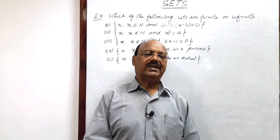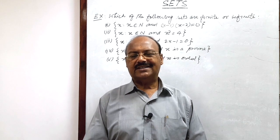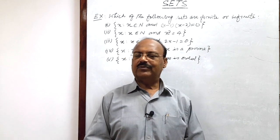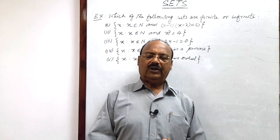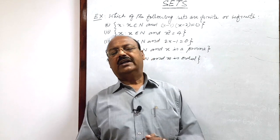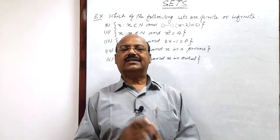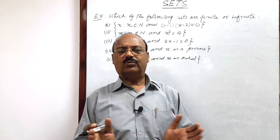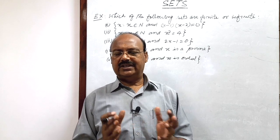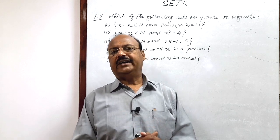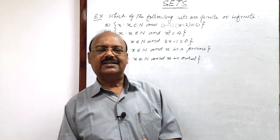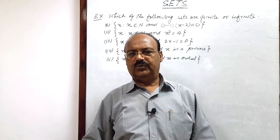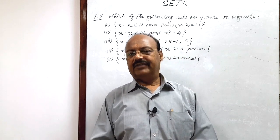For example, suppose we write the set of all vowels of the English alphabet. This will be a finite set, because this set consists of only five vowels: A, E, I, O, U. So here the number of elements is finite — this is an example of a finite set. But if you write the set of all natural numbers, there are infinite natural numbers, so that set is an infinite set.